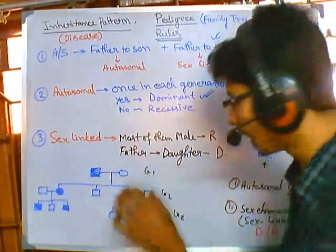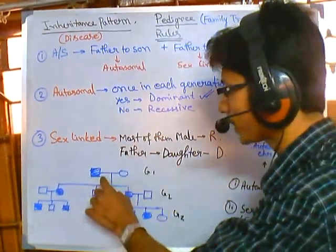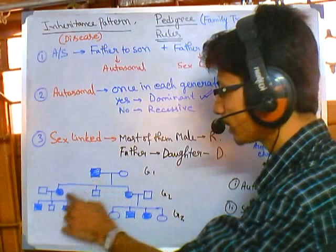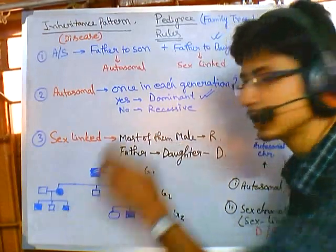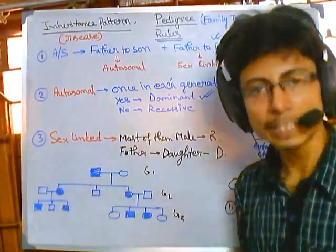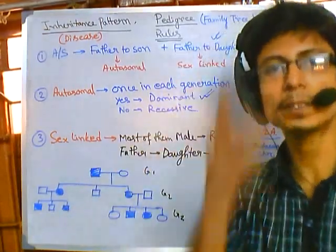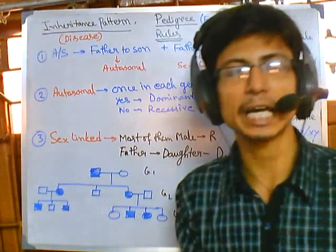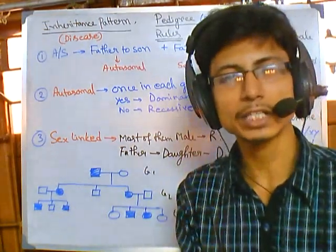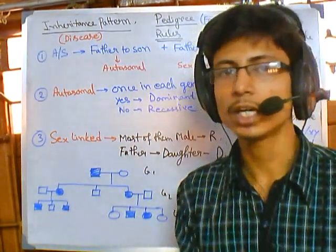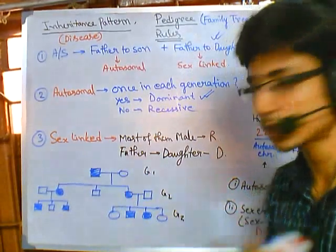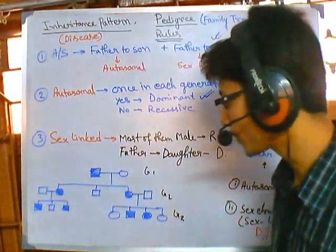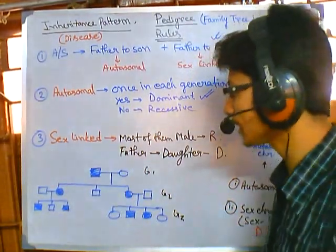What we get here is father-to-two-daughters inheritance for the disease, which means it must be sex-linked — it is not autosomal. This is a true rule, so you don't need to cross-check that anymore.